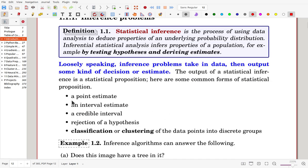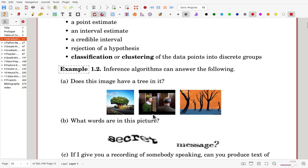then produce some kind of decision or estimate. This estimate, it can be a point, an interval, and some credible interval, and rejection of some hypotheses, or classification or clustering. For example, inference algorithms can answer the following. Through machine learning,